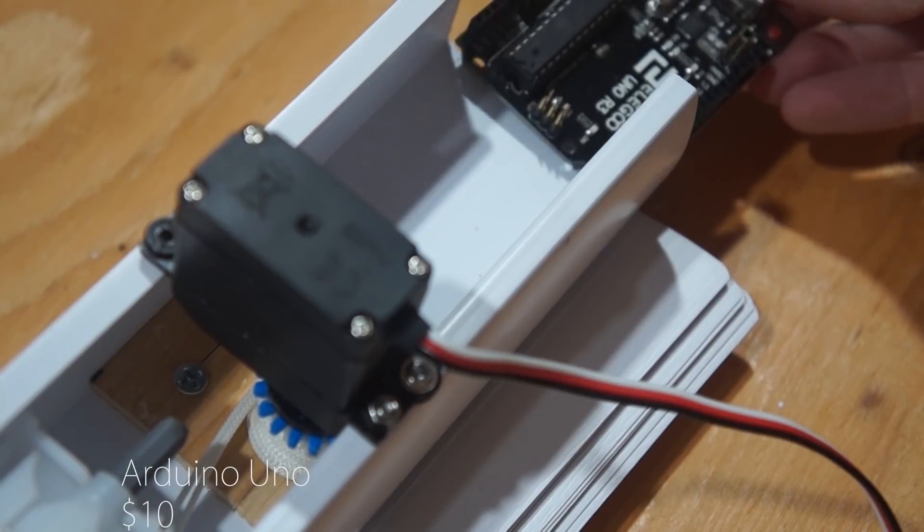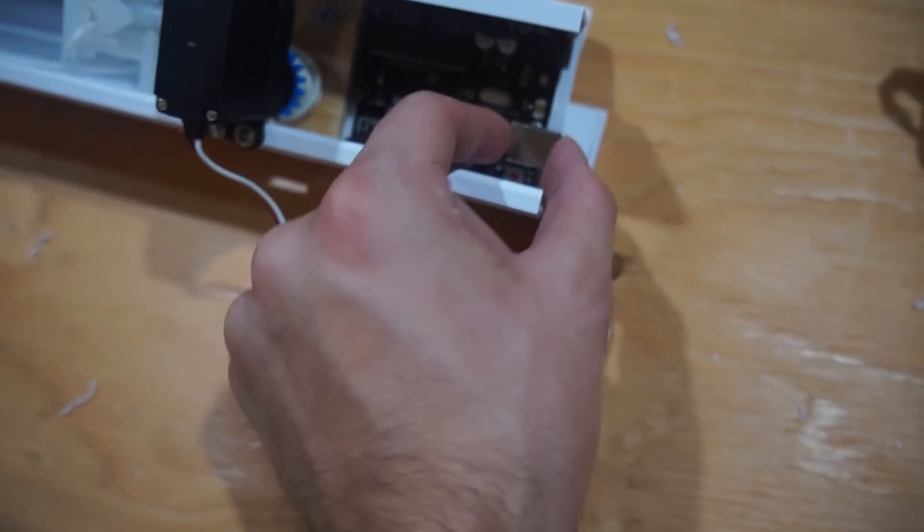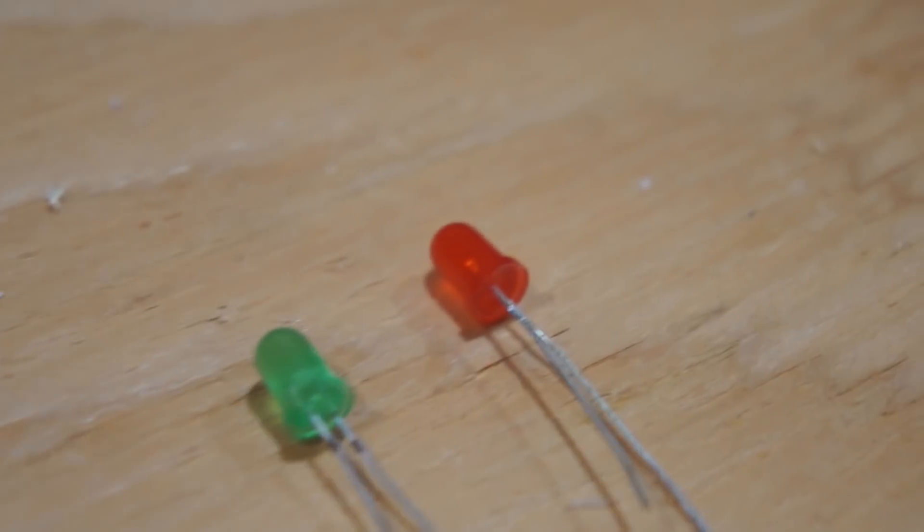And this is just a quick test to show how the mechanism works. Here's the Arduino board, you can pick it up for ten dollars. Now I'm going to install it into the blinds. I secured it with two bolts and nuts onto the bottom to make sure it doesn't move around inside.